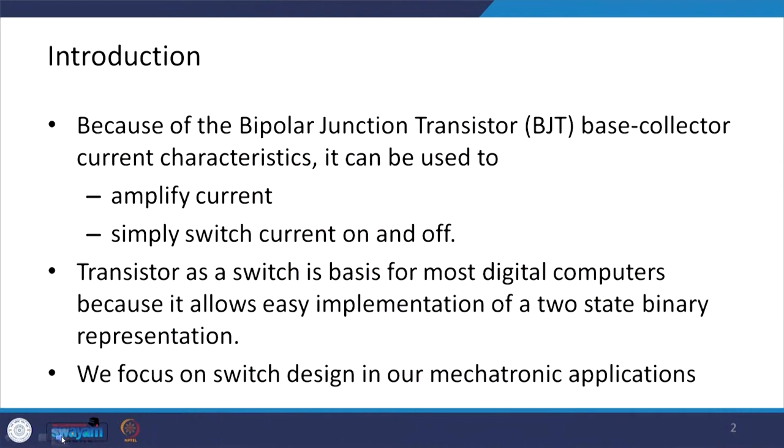Because of the bipolar junction transistor, or BJT, base current characteristics, it can be used for amplified current or as a simple switch to turn current on and off. The BJTs can be used for current amplification or simply as a switch. These are the two principal applications of the bipolar junction transistor.